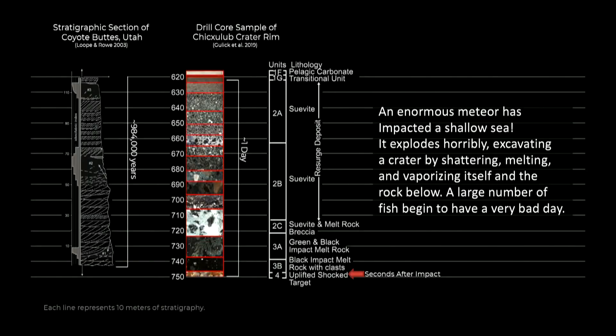So what was that day like? Well, it was not a great day. And so we're going to just briefly describe what happened in those first few inches. There is the first second. And Jeff wrote this lovely text, our wonderful Jeff, an enormous, no hyperbole there, an enormous meteor impacted a shallow sea. It explodes horribly, excavating a crater by shattering, melting, and vaporizing itself in the rock below. A large number of fish began to have a very bad day.